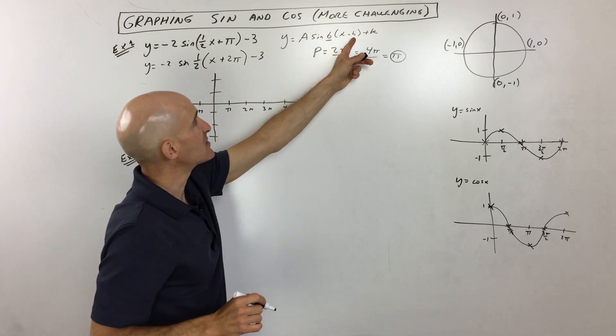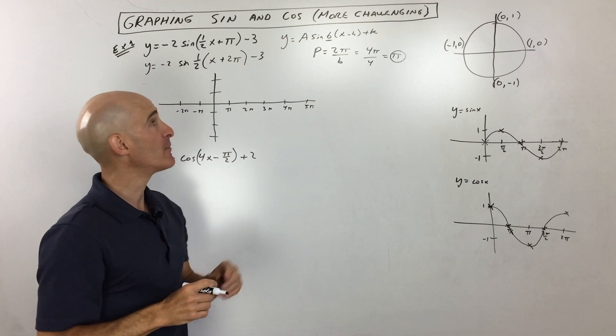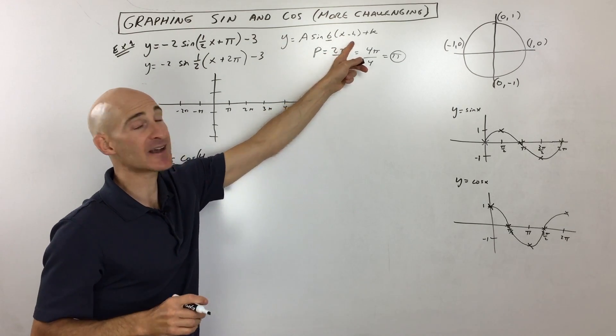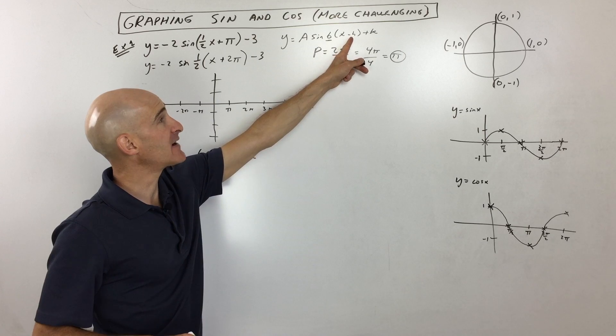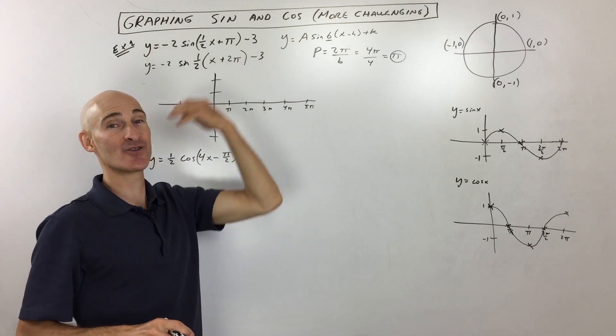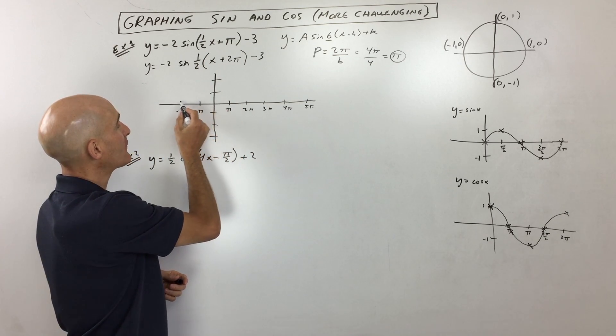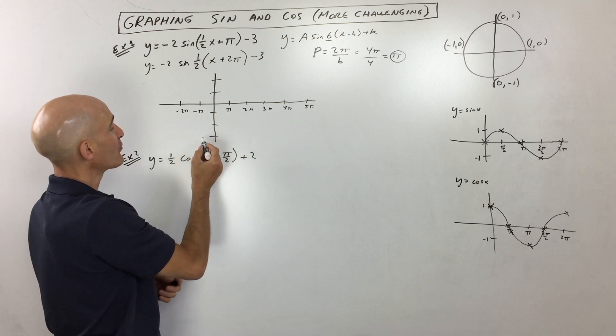Now you can see in this basic graph here, h and k, that's our shift. That's what's going to pick up the graph, shift it left and right, up and down. But remember, the one that's grouped with the x actually has the opposite effect. So if this was like minus pi, you would actually be going positive pi to the right. If it's plus pi, then you're going to go to the left. So here we have plus two pi. That means we're actually going to go left two pi. The minus three means we're going to go down three.